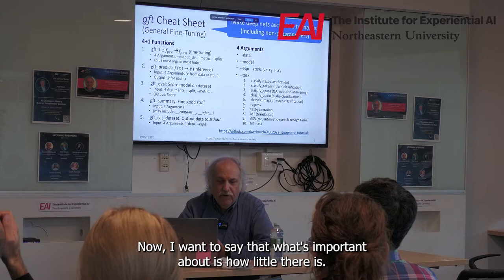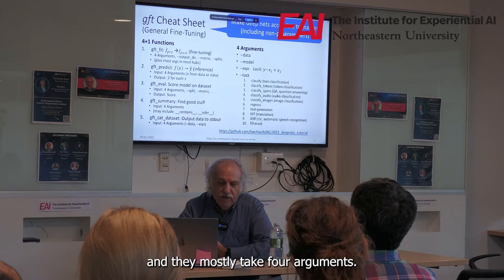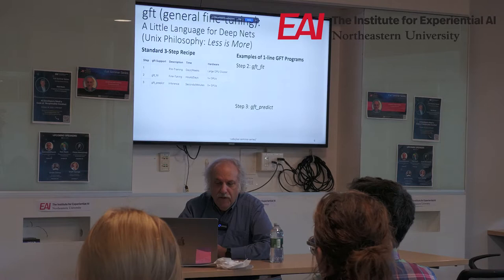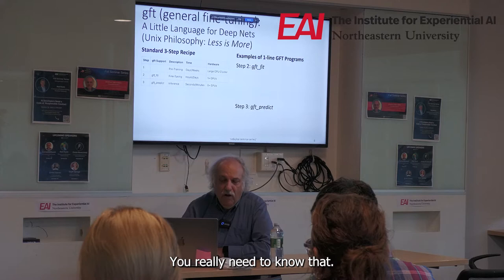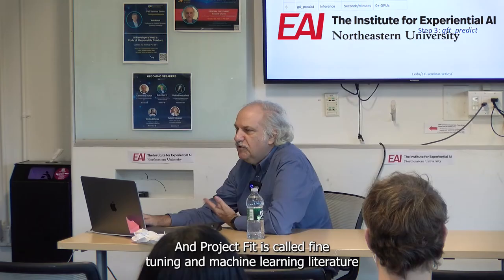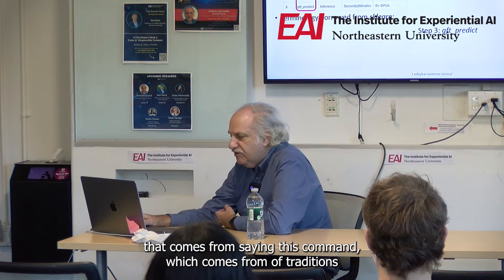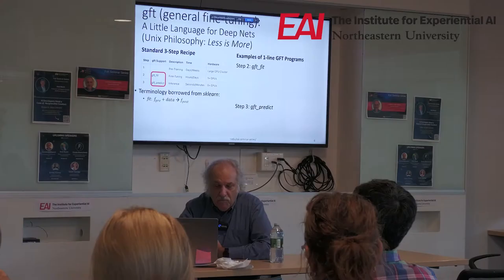What's important about it is how little there is. There really are only four or five functions, and they mostly take four arguments. There are hundreds of examples at the GitHub. This little language basically has just two functions you really need to know: fit and predict. Fit is called fine-tuning in machine learning literature, and predict is called inference. But I prefer the fit and predict terminology that comes from SK-Learn, which comes from decades of work in statistics.